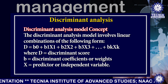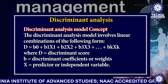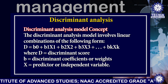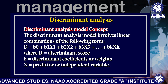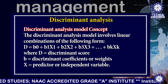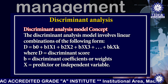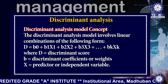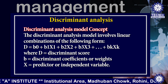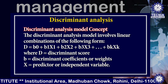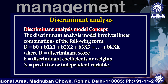The discriminant analysis model involves linear combinations of the following form: D = B0 + B1X1 + B2X2 + B3X3 + ... + BkXk, where D equals the discriminant score, B equals the discriminant coefficients or weights, and X equals the predictor or independent variable.